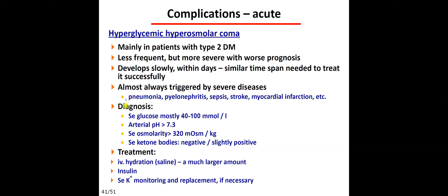Acute complications: diabetic ketoacidosis (DKA) occurs mainly in type 1 or insulin-requiring type 2 diabetes. Ketonuria develops within hours and hospitalization is needed. Triggers include infections (pneumonia, pyelonephritis, sepsis), stroke, or myocardial infarction. Serum glucose is typically 14+ mmol/L, arterial pH below 7.3, with positive ketone bodies. Hyperglycemic hyperosmolar non-ketogenic coma occurs in type 2, is less frequent but more severe, with glucose reaching 40–100 mmol/L, normal pH, very high osmolality, and negative or minimal ketones — requiring massive IV hydration and potassium replacement.